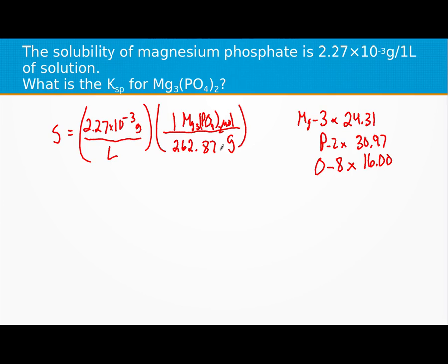All right, we'll actually do that in our calculator. I ended up with something like 8.6 times 10 negative sixth.